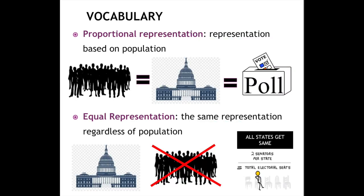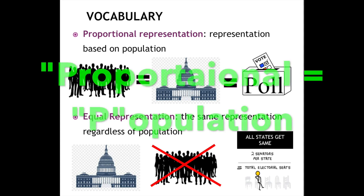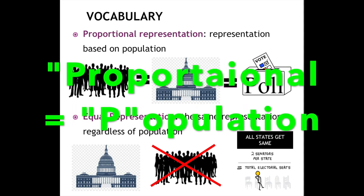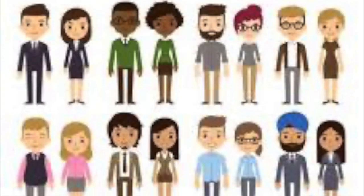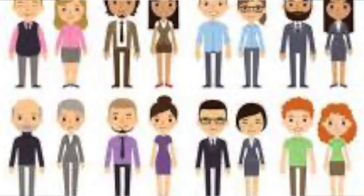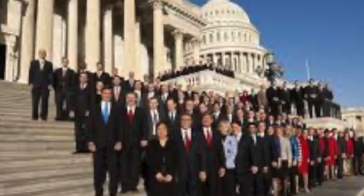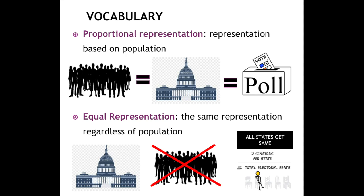Two more important words: proportional and equal representation. The P in proportional — tie it into population — because it basically means that representation in Congress, the amount of representatives, should be based on a state's population. So the more people you have living in your state, the more representatives you should have in Congress, and if you have more representatives, then you have more influence and more of a say because you'll have more votes in Congress when trying to pass certain laws.